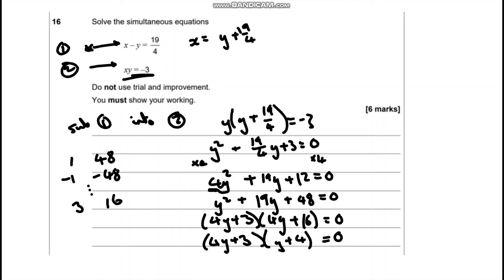So we're going to get a value for y. Either y equals negative 3 quarters or y equals negative 4.